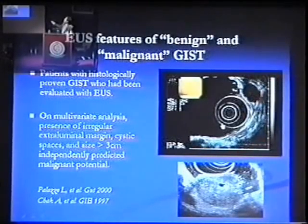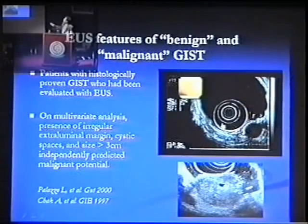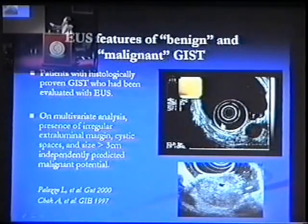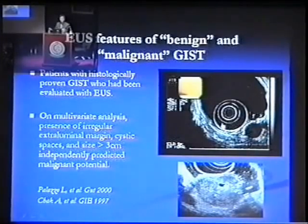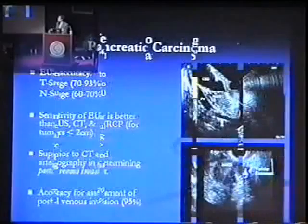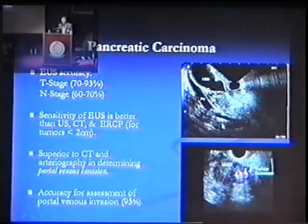You can see here how we have this lesion that is completely continuous with the muscularis layer. So this is a diagnosis of GIST, and some features on EUS to help you determine if this GIST has a high malignant potential or low malignant potential.